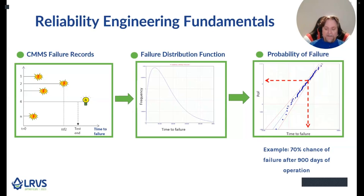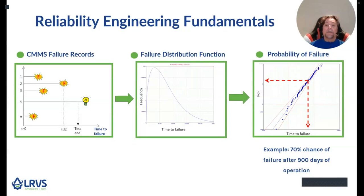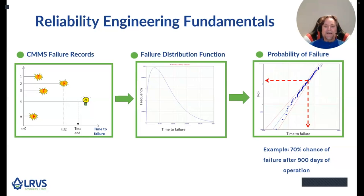We are trying to predict how a typical light bulb is going to survive in the future. For example, the last graph shows the probability of failure after a certain time interval — so the probability of failure of a light bulb after a certain time in operation. Reading off the graph, we have a 70% chance of having a failure after 900 days of operation. Further calculations will show we expect two light bulb failures over a 1500-day interval, which means I need two spare light bulbs in stock over this interval to replace those failed light bulbs.